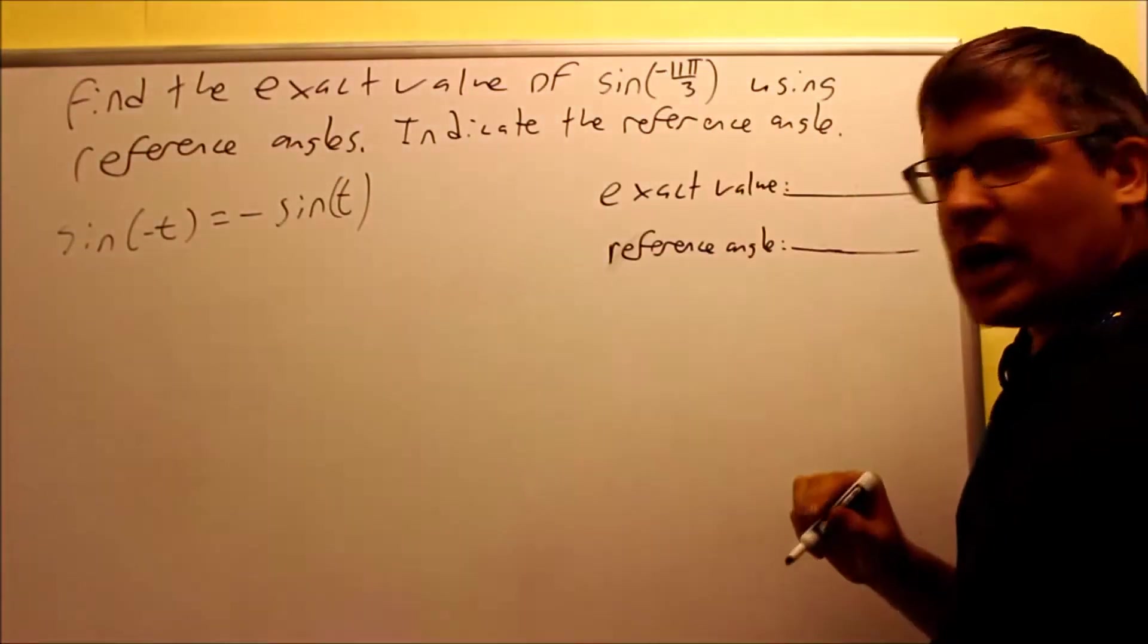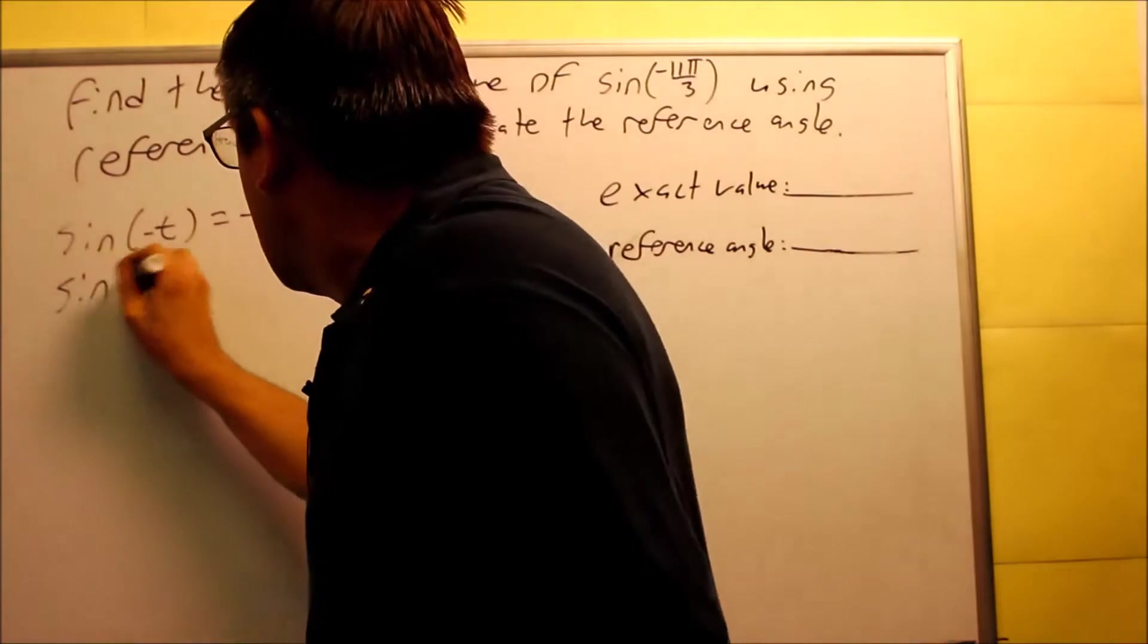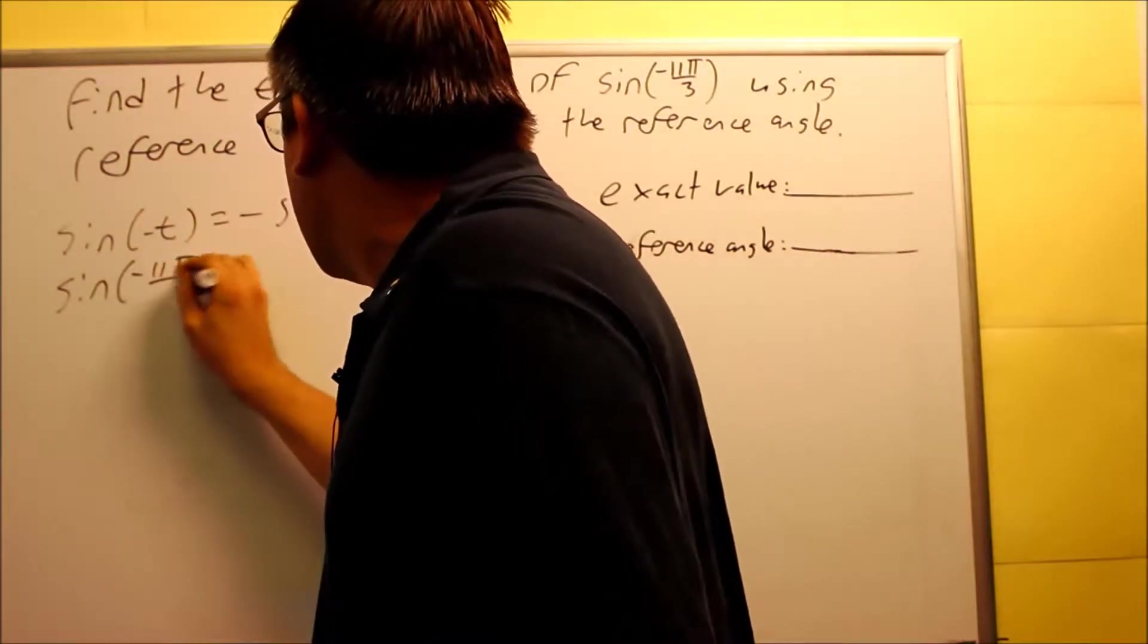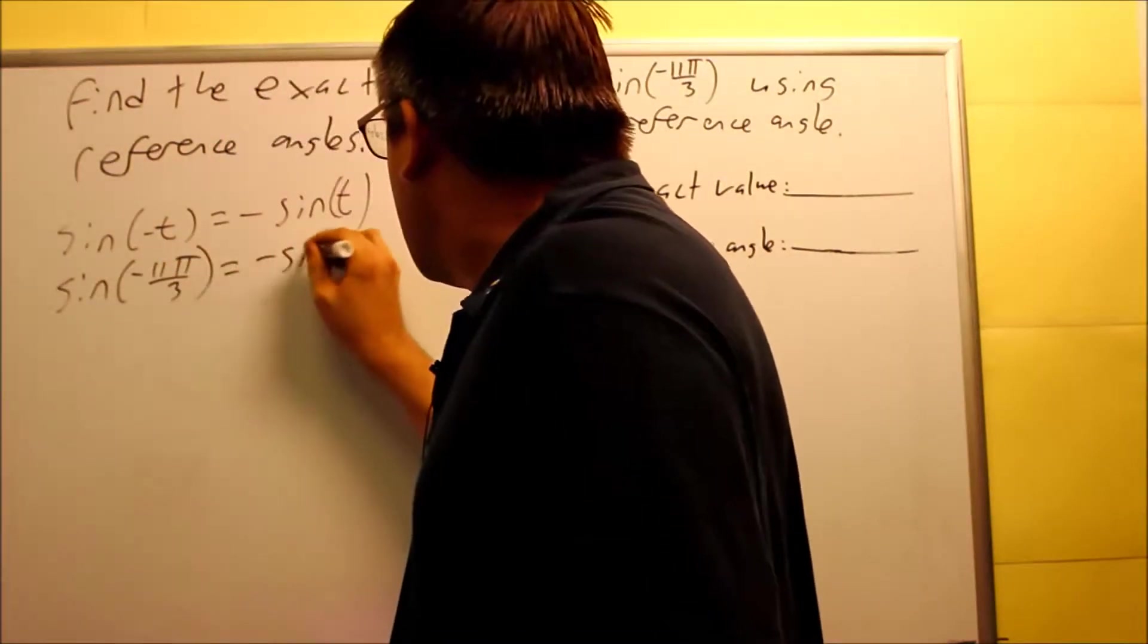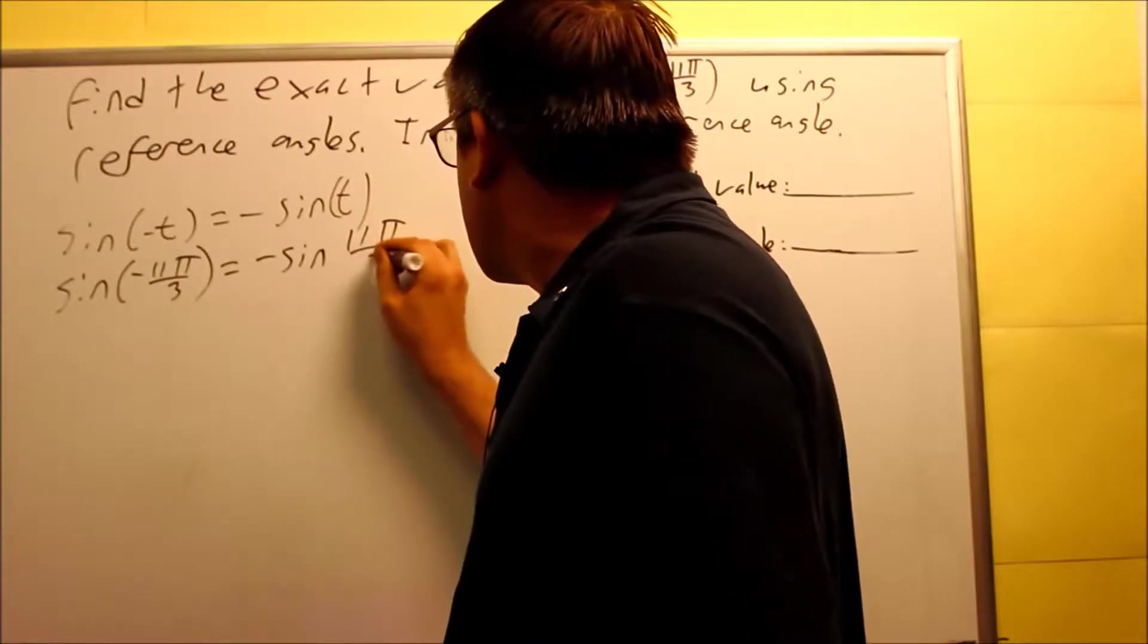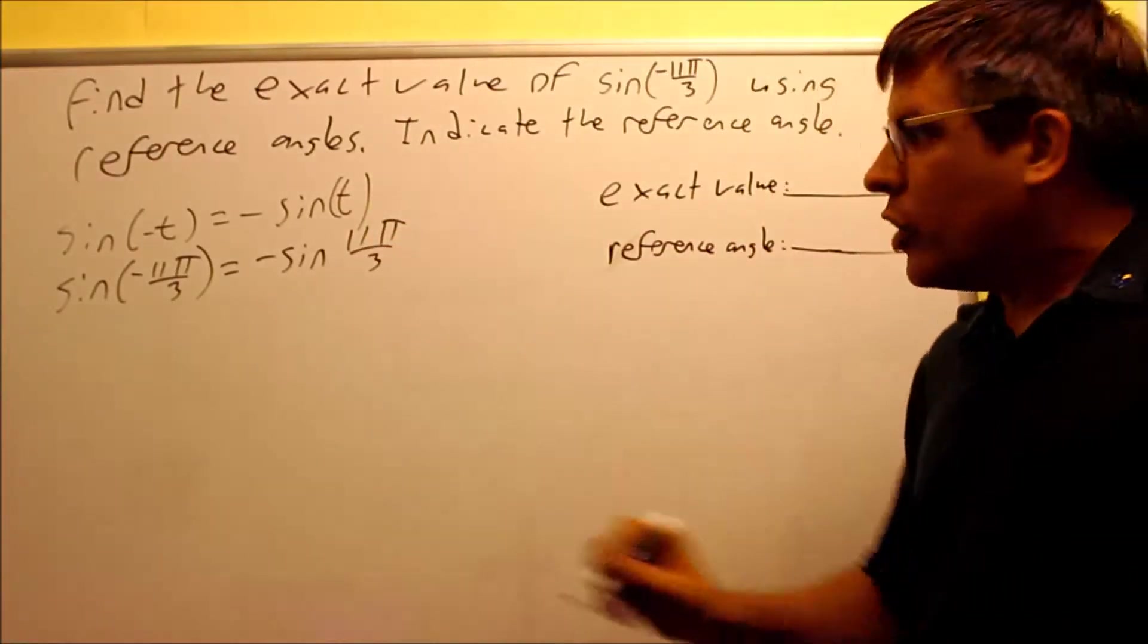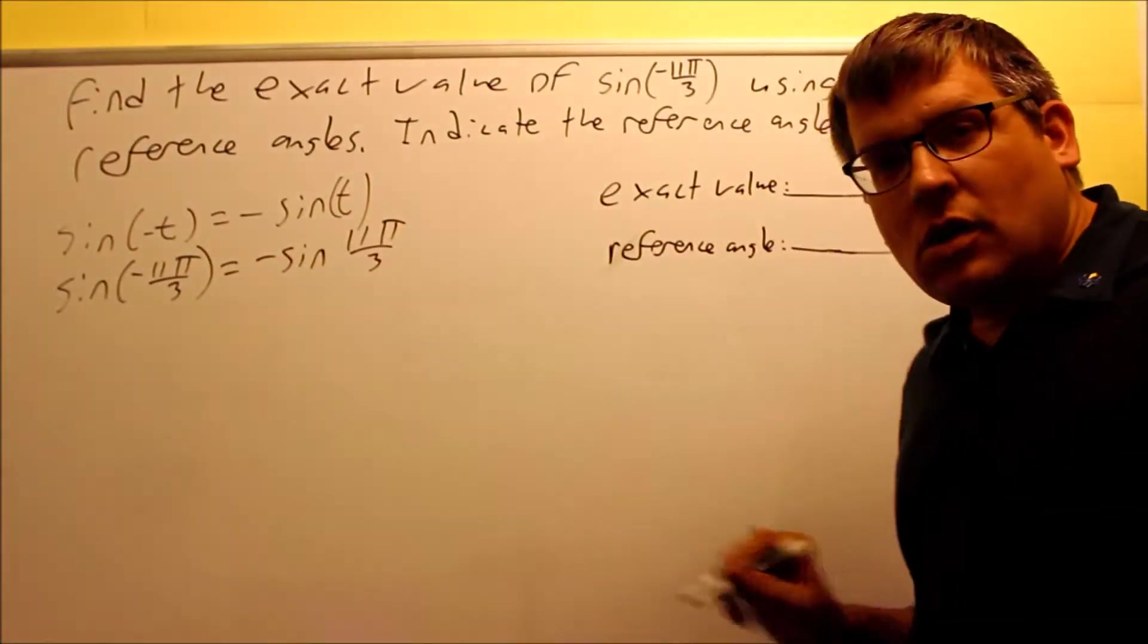In our case, we have negative 11π over 3. So I have sine of negative 11π over 3 equals negative sine 11π over 3. By doing that, I'm able to rewrite the negative angle as a positive angle.